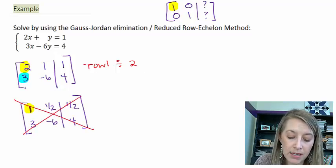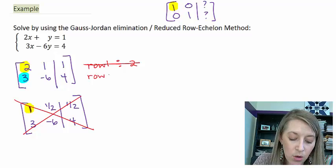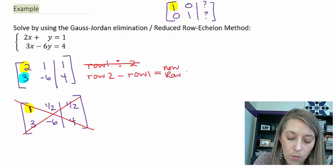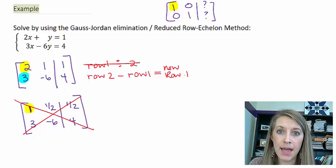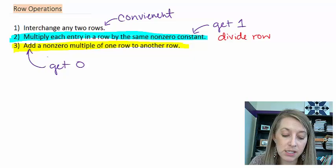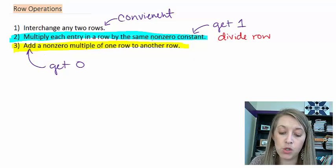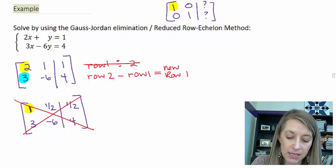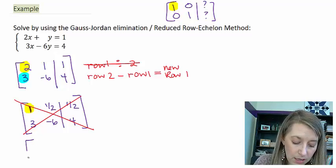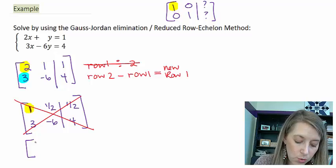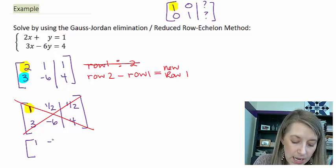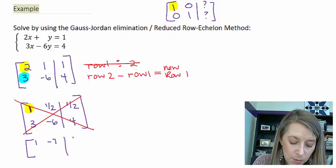Instead of doing it this way, let me see if I can do it a different way. Let me take my row 2 and subtract my row 1, and that's going to be my new row 1. I can do this. This is basically me adding a multiple of one row to another row. I'm just not multiplying row by anything, or I'm multiplying it by 1. So if I did this, that would give me 3 minus 2, which is 1, negative 6 minus 1 is negative 7, and 4 minus 1, which gives me 3.